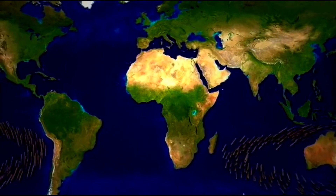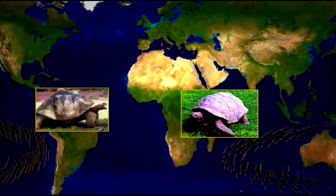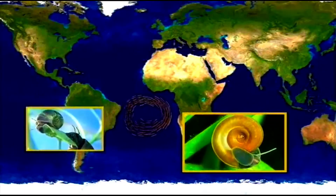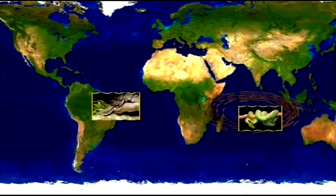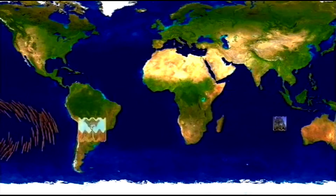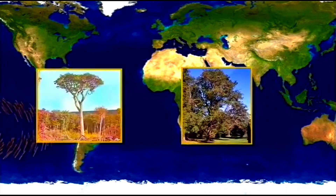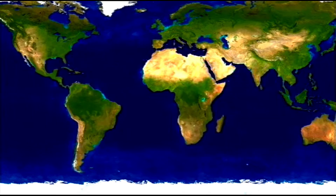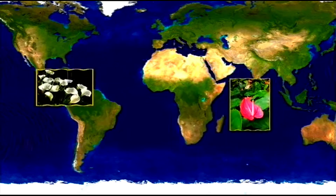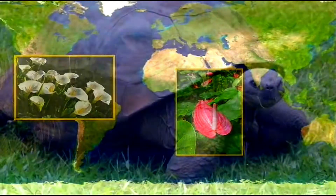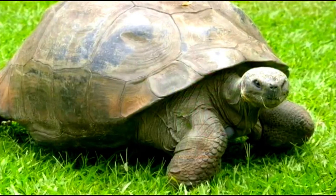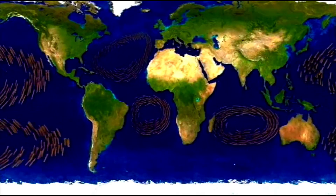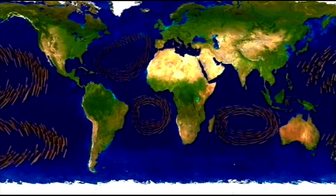Rafts may also explain how tortoises got to remote islands. Interestingly, most modern animals and plants with ranges split across oceans follow the pattern of modern currents. Their distribution can be explained by rafting. In this way, the flood and its aftermath provide a solution for one of the many mysteries of biology: split ranges.